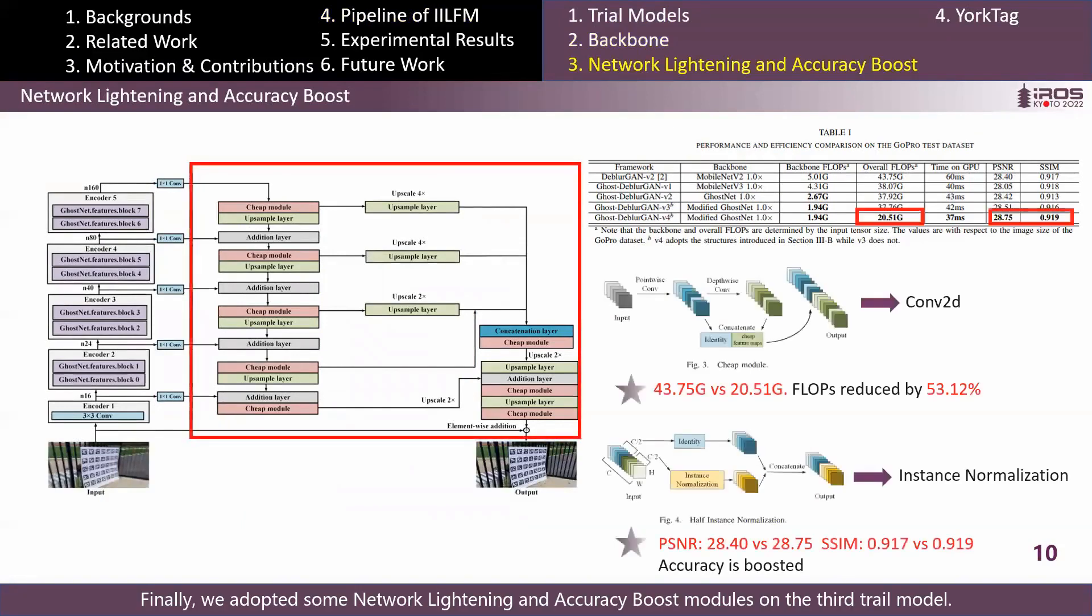Finally, we adopted some network lightening and accuracy boosting modules on the third trial model. As mentioned, the last one outperforms DeblurGAN V2 and MobileNet V2 in all terms. You can refer to our paper and code to check out the detailed operation of these modules.